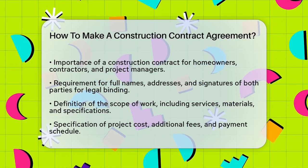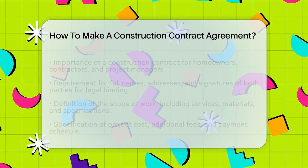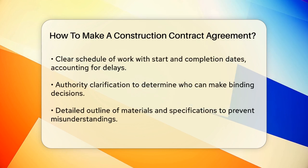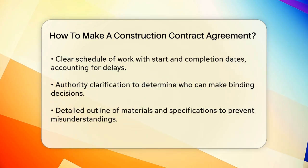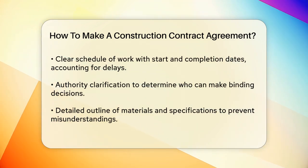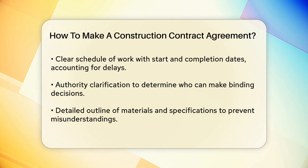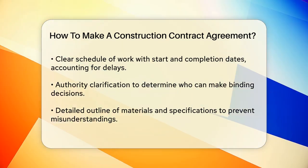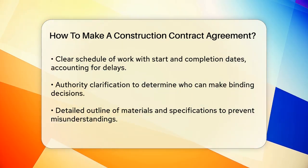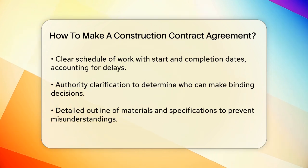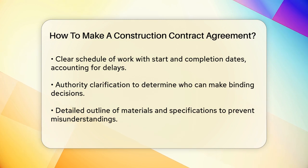The project cost and payment terms are also critical. This part of the contract should clearly state the total cost of the project, any additional fees, and the schedule of payments. It's important to specify how payments will be made, such as through monthly installments, and what methods of payment are acceptable, like cashier's checks or credit cards.